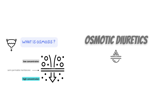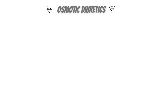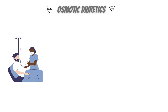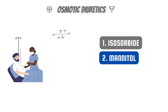An osmotic diuretic prevents the reabsorption of water and sodium and hence increases urine production or causes diuresis. They are intravenously administered, pharmacologically inactive compounds. They make the blood and renal filtrate more osmolar. Isosorbite and manitol are two examples of osmotic diuretics.